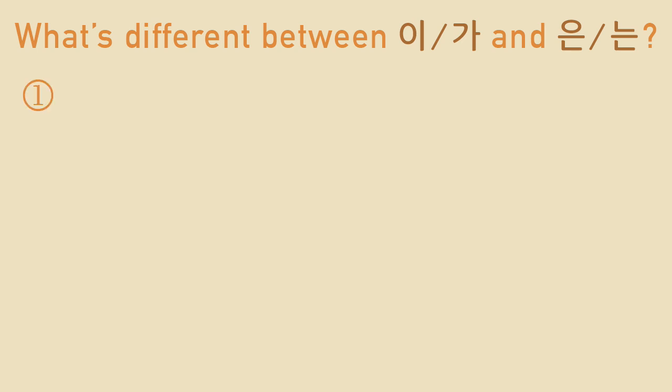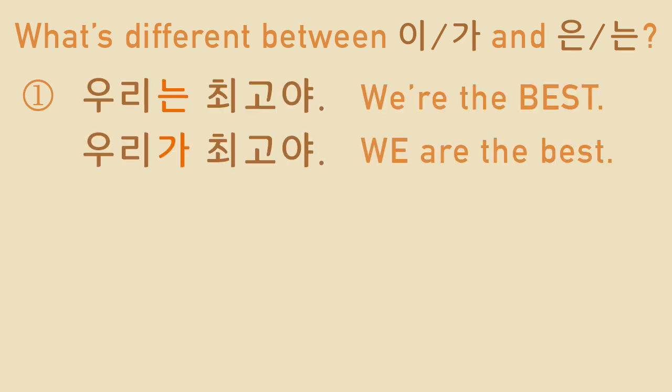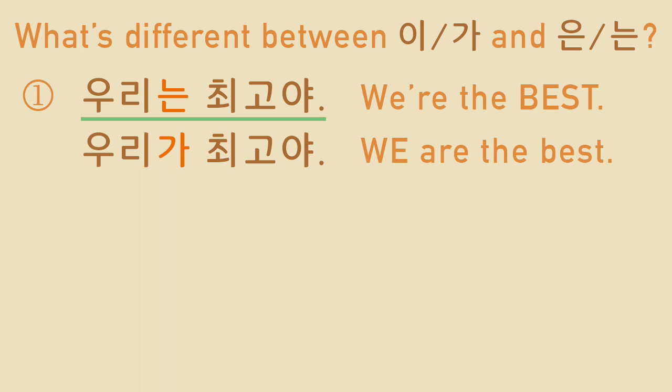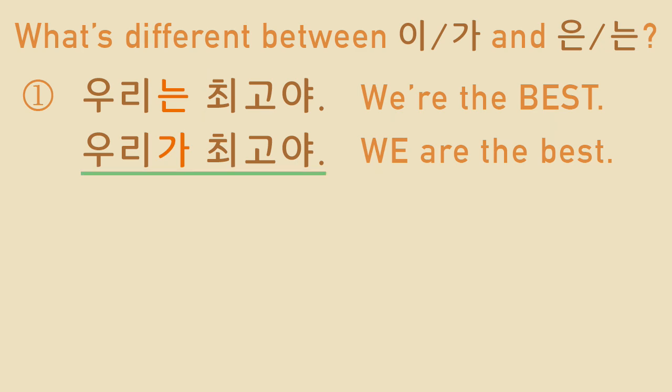The first difference. Let's compare these two: 우리는 최고야 and 우리가 최고야 — both mean 'We are the best.' When you say 우리는 최고야, the predicate part is the main point you want to convey. When you say 우리가 최고야, then 우리 is the main point you want to convey.